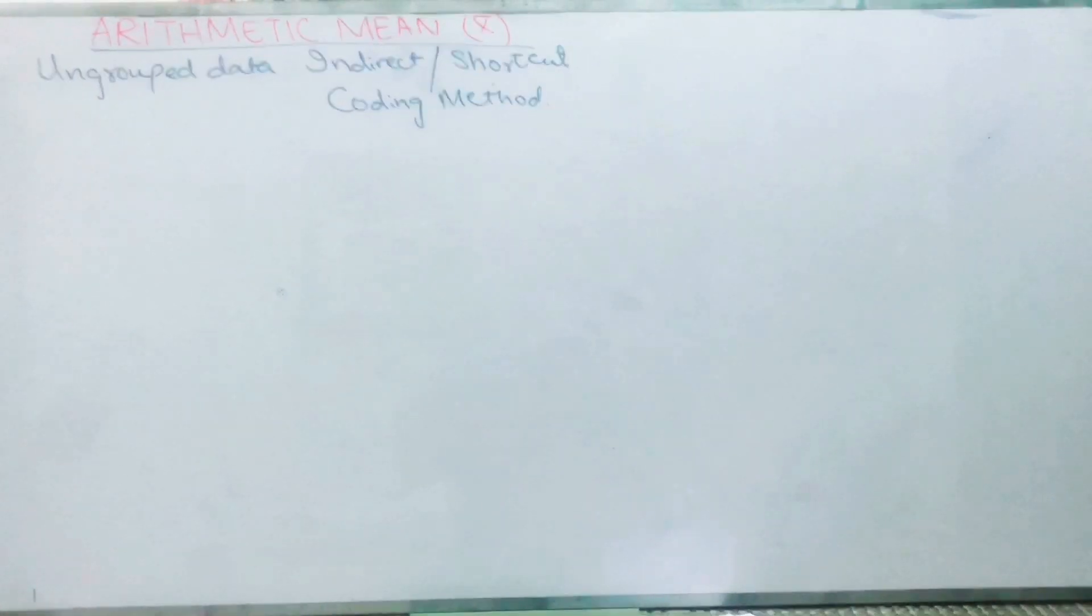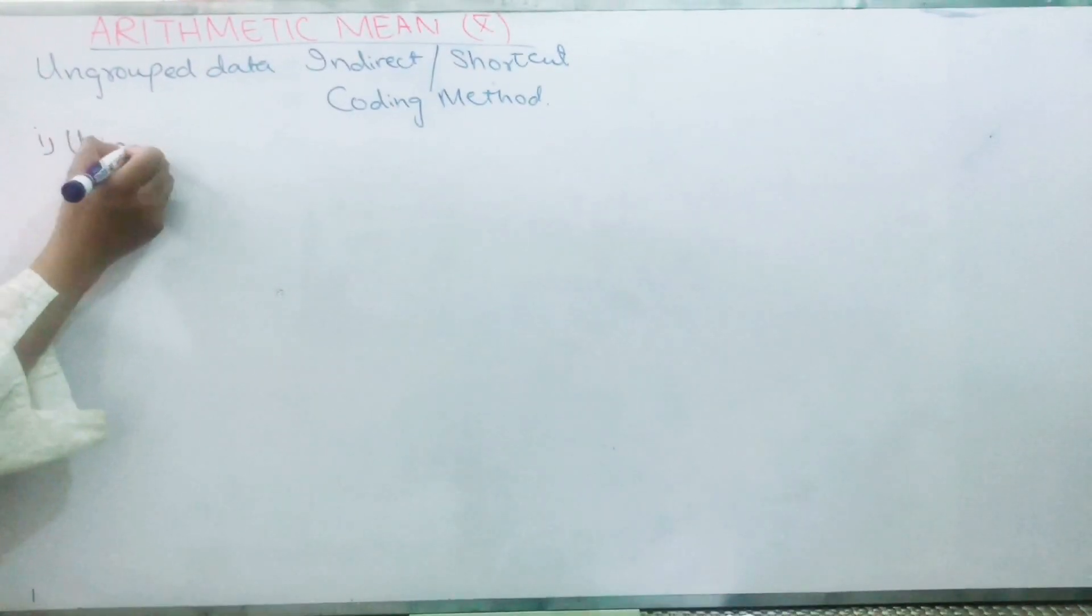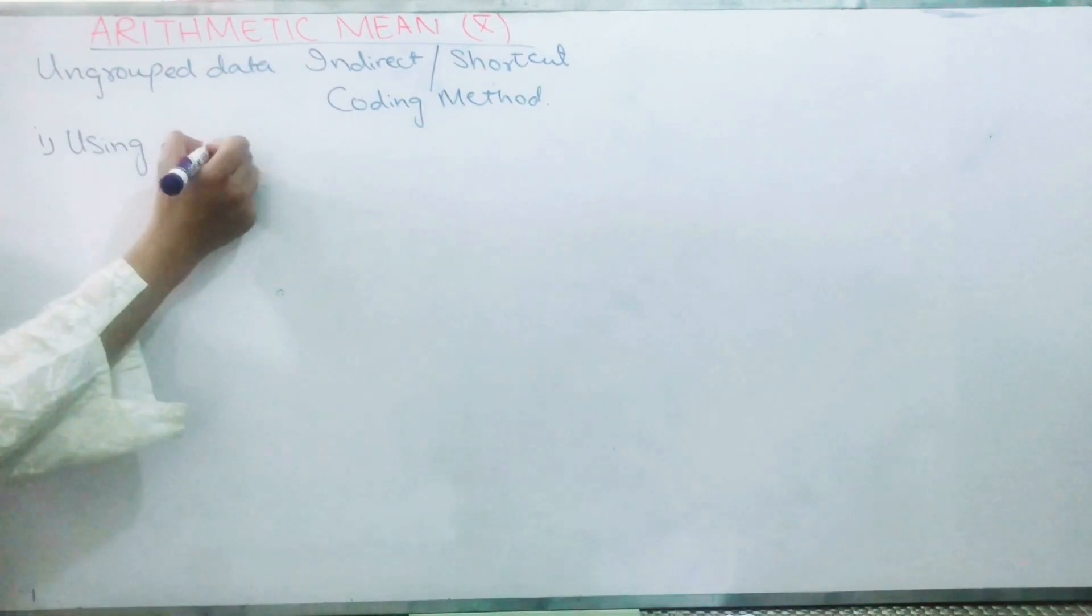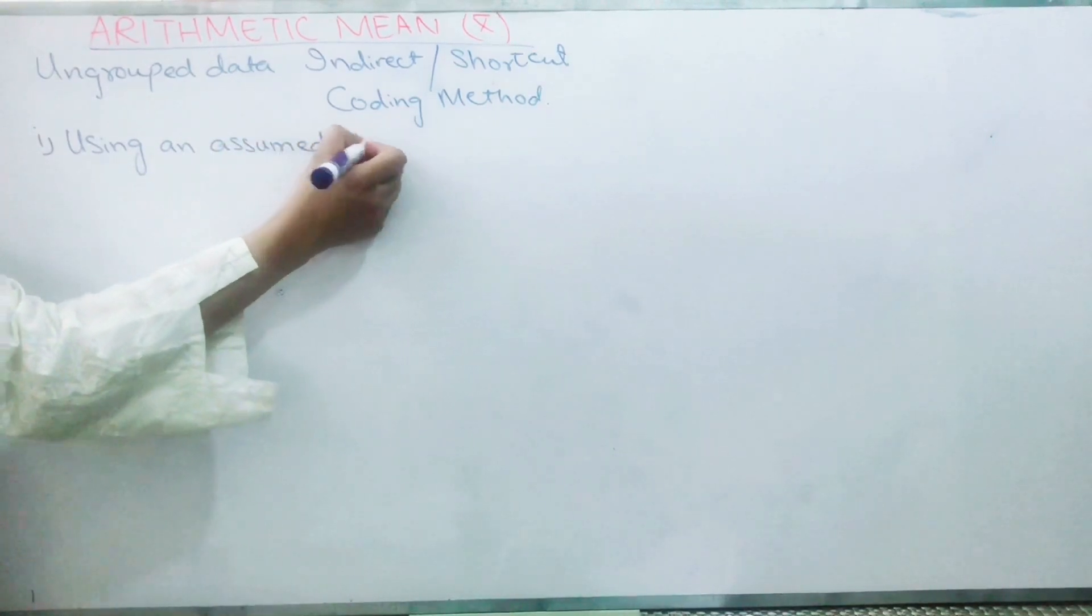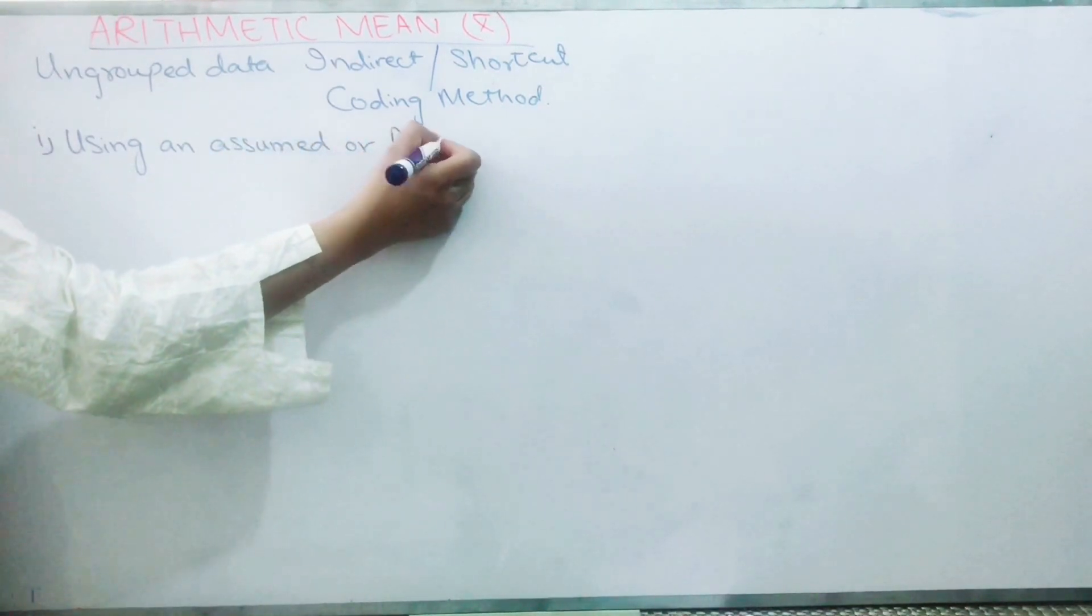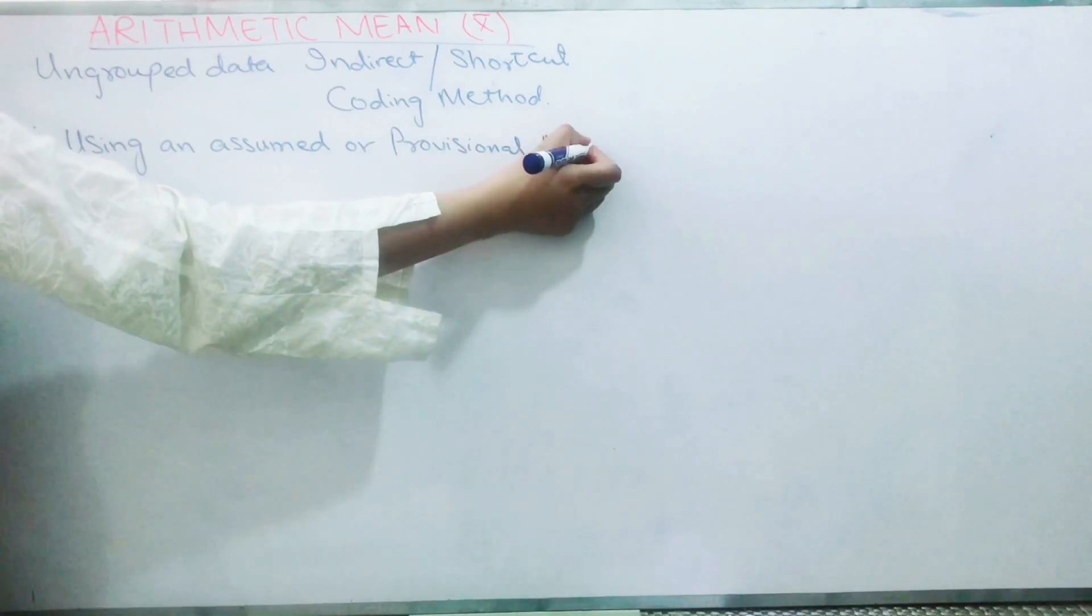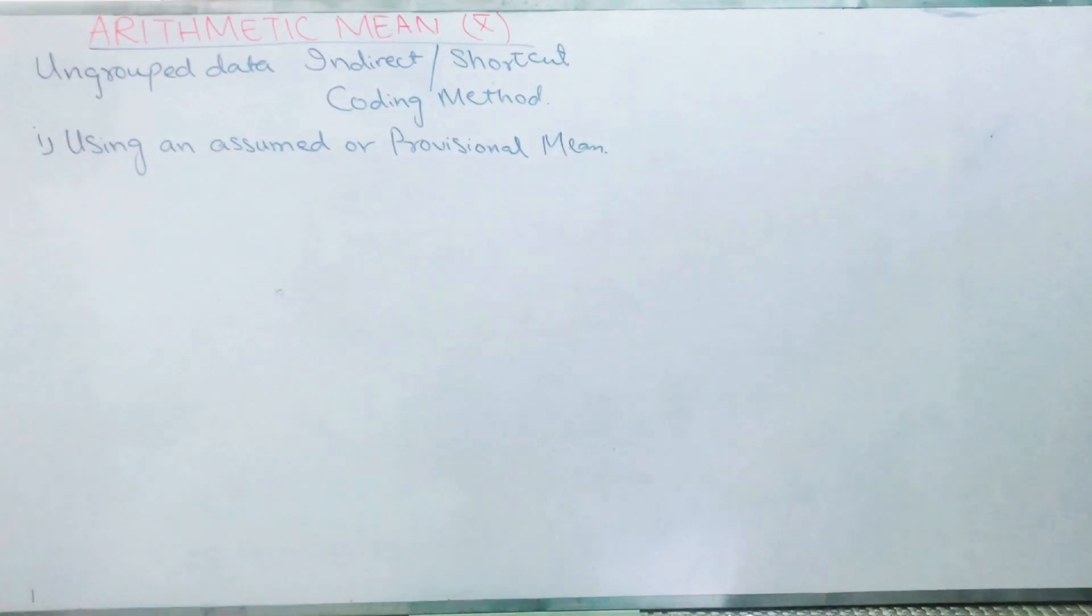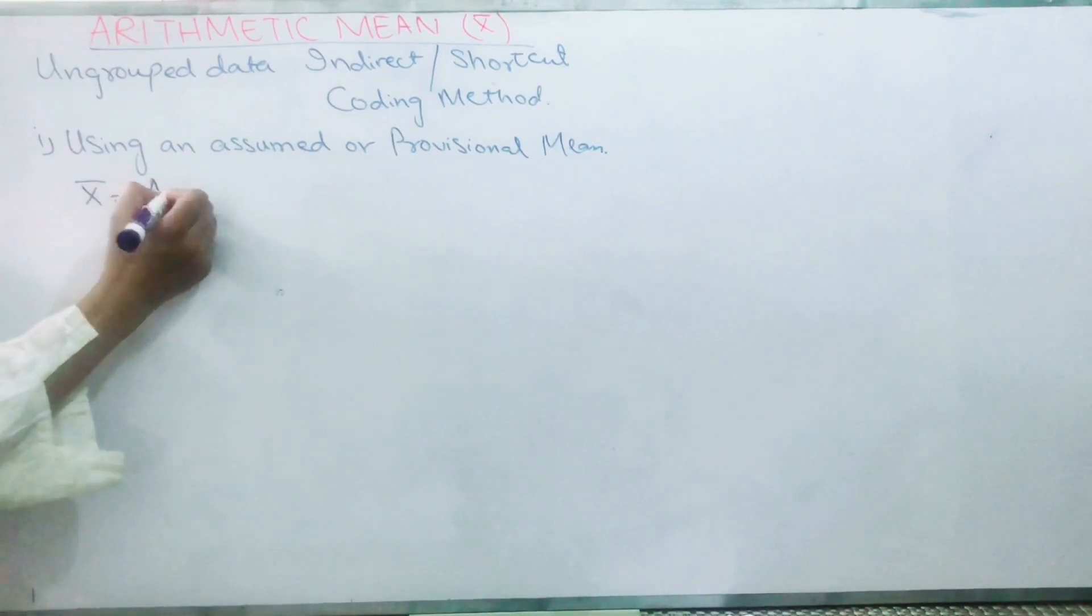We have two methods for indirect, shortcut, or coding method. First one is using an assumed or provisional mean.